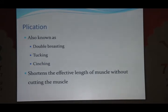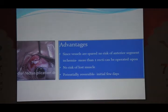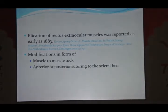Therefore, an alternative in the form of plication comes very handy when you want to operate on more than two recti at the same sitting. Plication is also known as double-breasting, tucking, or cinching. It effectively shortens the length of the muscle but without cutting. We fold the muscle. The advantages over resection are that since vessels are spared, the risk of anterior segment ischemia is less. There is practically no risk of lost muscle, and in initial stages it can be potentially reversible. It was reported as early as 1883 and has various modifications.